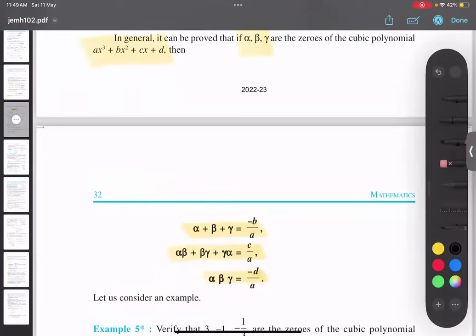Okay, let me just write it down. So this is sum of zeros: alpha, beta, gamma addition. This is product of zeros.